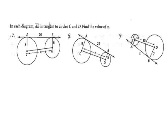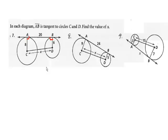Here we have three similar problems — expect to see this on a quiz or test. In the diagram, AB is a common tangent to both circles, and tangents are perpendicular to the radius. The radius of one circle is 6 and the other is 8. We need to find the length of the slanted line connecting the circles. Pause the video and think about how you would do that.